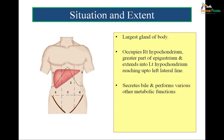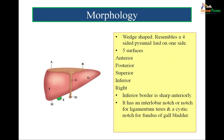Now, situation and extent of the liver. Liver is the largest gland of the body. The largest organ of the body is skin while the largest gland of the body is liver. The liver lies in the right hypochondrium, epigastrium and it also extends into the left hypochondrium. The liver secretes bile and performs important metabolic functions. The shape of the liver is like a wedge — it is wedge shaped and resembles a four-sided pyramid laid side to side.